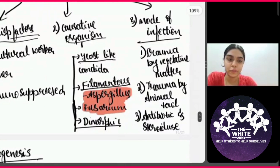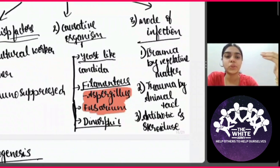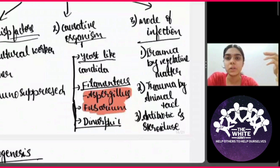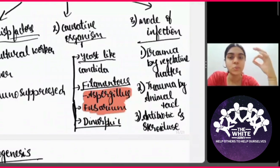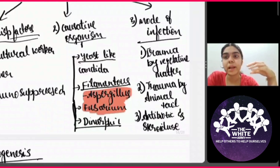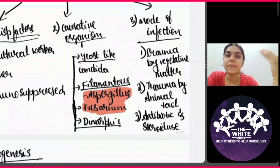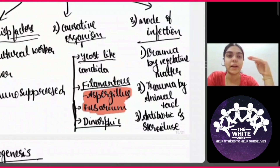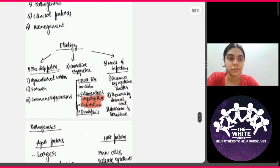When it comes to the mode of infection, it is usually by trauma by vegetative matter. It can also be due to trauma by animal tail, as dogs or cattle can also have fungi in their tails. The third major mode of infection is antibiotic use and steroid use. What happens is the resident bacterial flora in the eye is destroyed, so fungi start becoming opportunistic organisms, causing more fungal ulcers because there is a loss in balance between the bacterial flora and the fungal flora.